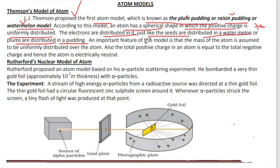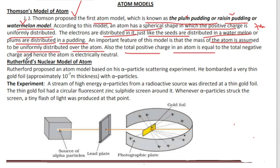An important feature of this model is that the mass of the atom is assumed to be uniformly distributed over the atom. Also, the total positive charge in the atom is equal to the total negative charge, and hence the atom is electrically neutral.